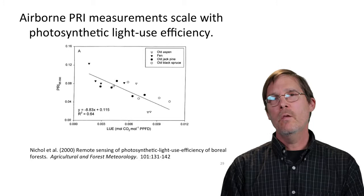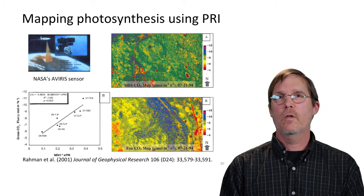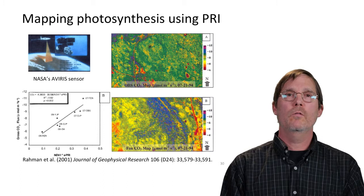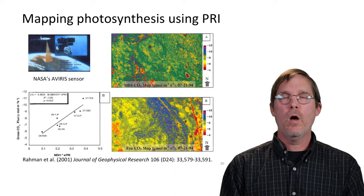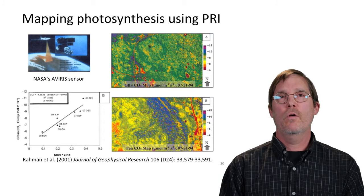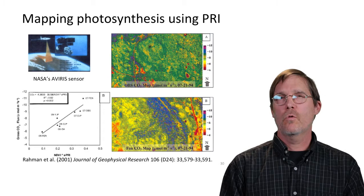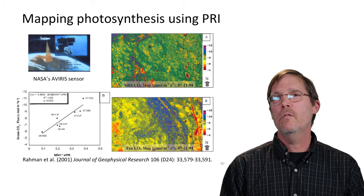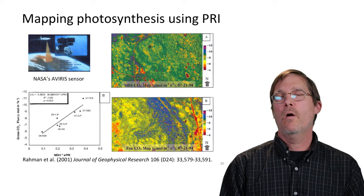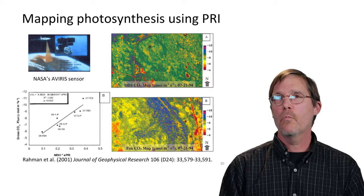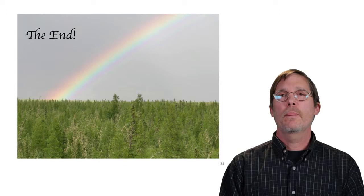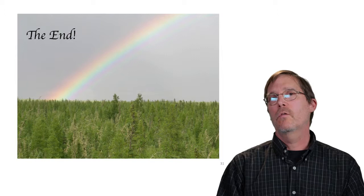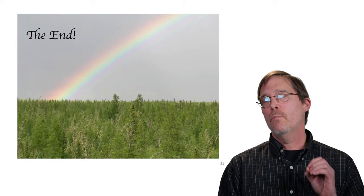Similarly, a colleague Fais Raman did a study in the boreal forest using the AVIRIS sensor, where PRI is put into a model to measure light use efficiency and combined with NDVI. That modeled product is compared to carbon flux measured by eddy covariance at various boreal forest sites, and we see a significant relationship. Based on these kinds of approaches, you can actually map photosynthesis in real time using PRI as a dynamic indicator of how photosynthesis changes in time and space.